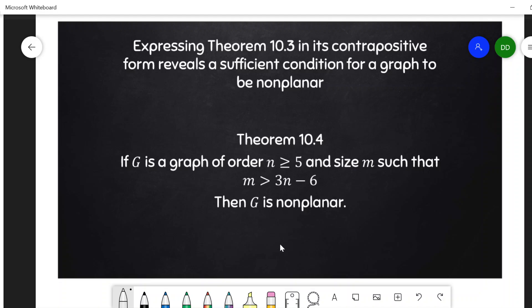You can be non-planar and still have less edges than this. So that was the three n minus six, this upper bound on the number of edges. That's a necessary condition to be planar. And it's a sufficient condition to be non-planar. But it's not both necessary and sufficient for either of these.